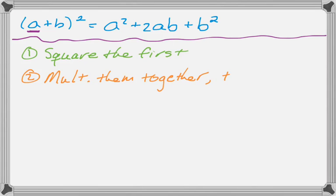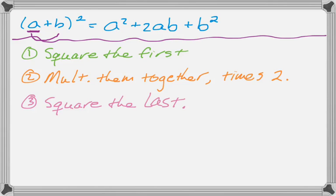So multiplying them together would mean to multiply a and b. So you'd get ab, and then times 2. So we would do that. Then we're going to square the last. And so squaring the last would be b squared.